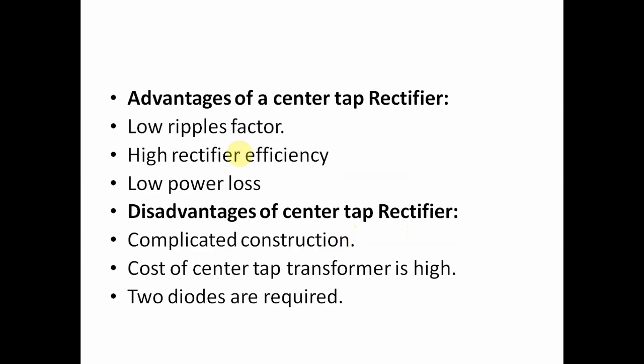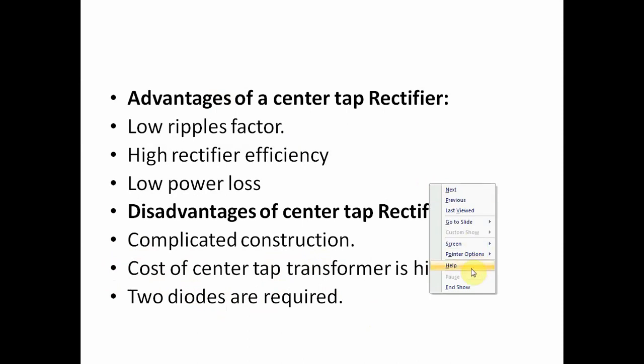These are some advantages of the center tap rectifier: low ripple factor, high rectifier efficiency, and low power loss. These are some disadvantages: the cost is very high, two diodes are required, and construction is complicated because of the center tap transformer. The circuit is complex because the center tap transformer is heavy, highly costly, and requires two diodes.